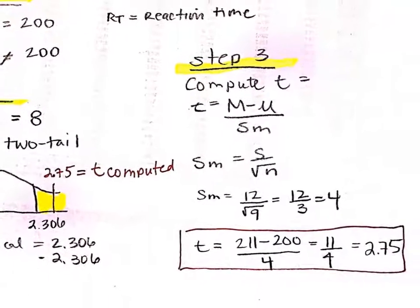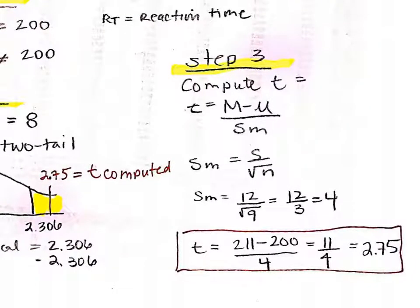Step 3 is to actually compute the t. The equation is: t = (sample mean − population mean) / estimated standard error. The estimated standard error s_m is computed by taking the standard deviation divided by the square root of n, so 12 divided by the square root of 9, which gives 12 over 3, equals 4. Then to compute t: sample mean is 211, population mean is 200, and the estimated standard error is 4. So 11 divided by 4 equals 2.75. Our t-computed is equal to 2.75.